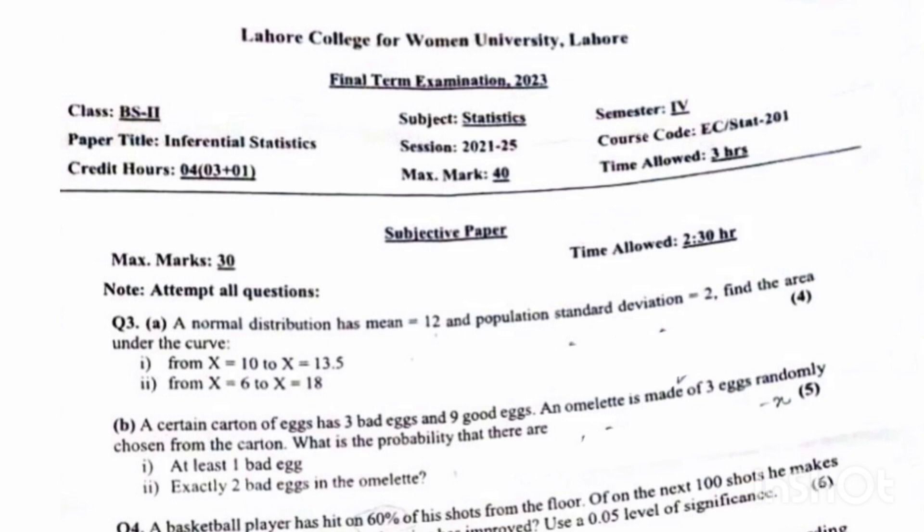A normal distribution has mean equal to 12 and population standard deviation equal to 2. Find the area under the curve. Is mein x ki values aap ko given hai. Iska b part hai.